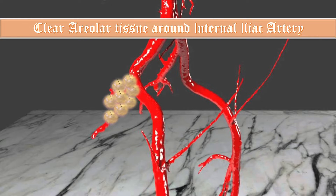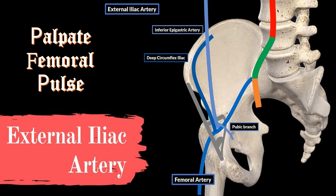Also palpate or identify the external iliac artery and be in position to palpate the femoral pulse. This is important because the main hazard is trauma to the external iliac artery or to the internal iliac vein, which lies just beneath the internal iliac artery.